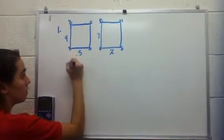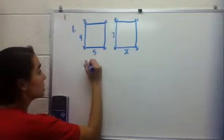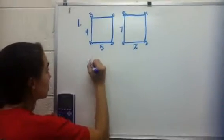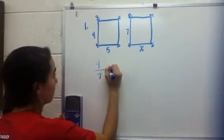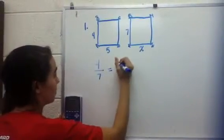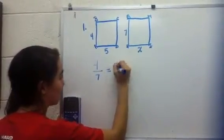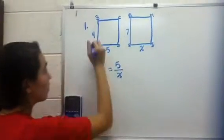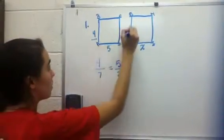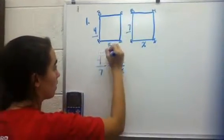First, you're going to set up your proportion by finding the similar numbers that are congruent. So it would be 4 over 7 equals 5 over X.